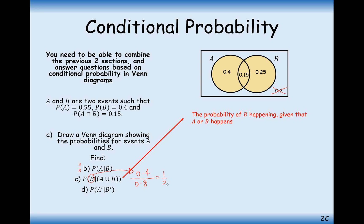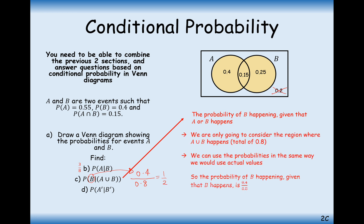The way to think about this is: the probability of B given that A or B is true means the second condition goes on the bottom of the fraction, and the first — probability of B — goes on the top. But you don't count any areas that are not included in the given condition. So it has to be in A or B for it to count. It's a little bit more fiddly, but the logic is the same.